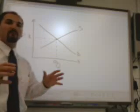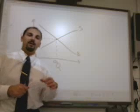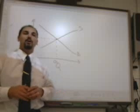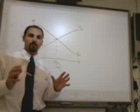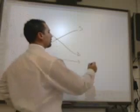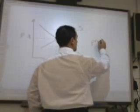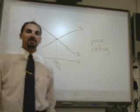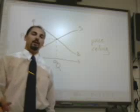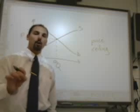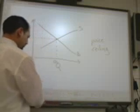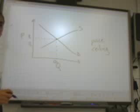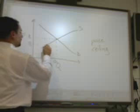Sometimes the government will make the decision that the market prevailing price — here P1 — is unfairly high to consumers. So in an effort to protect consumers, the government will create what's called a price ceiling. When the government creates a price ceiling, it is setting the price level below what would be the equilibrium price level — a price something like this, price two.